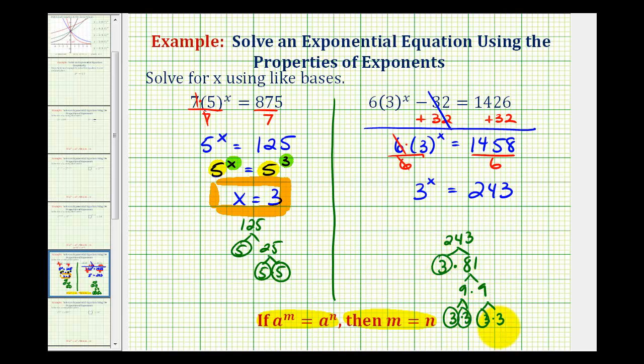Since 243 equals five factors of three, we can write this as 3^x = 3^5. Now that these are equal and we have a common base of three, the exponents must be equal. Therefore, x = 5.